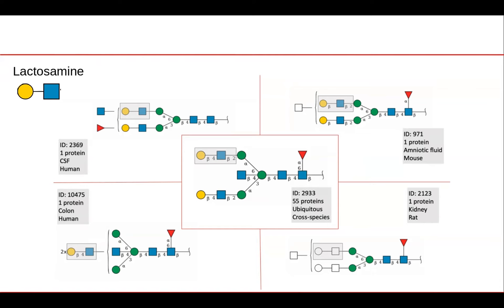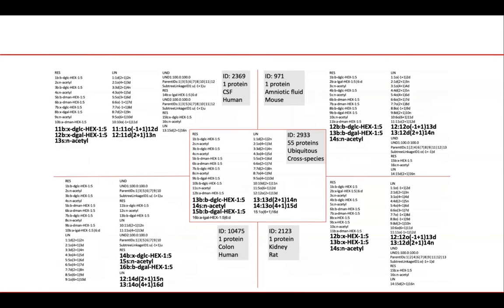Why is this important? If we're looking for a substructure — for example, the lactosamine unit shown in the top left-hand corner, represented by a blue square and a yellow circle — visually it's easy to see where that is in all of these cartoons. But if we look at the string format behind it, the lactosamine unit appears in bold and there are five different ways of coding that unit. As a computer needs some kind of string format to parse, this becomes quite a complex problem.